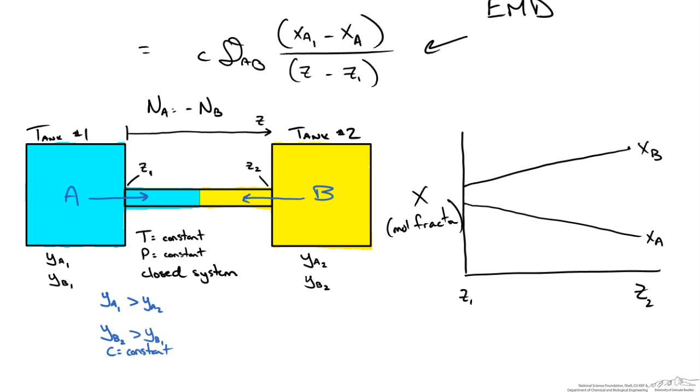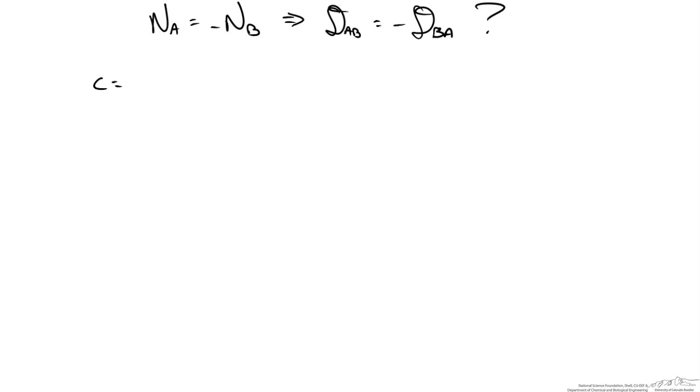One last thing to point out with this binary system is if we know that the flux of A must be equal and opposite to the flux of B, does this also mean that the diffusivity of AB is equal to the negative diffusivity of BA? Well we know that the concentration is constant and this is equal to the concentration of A plus the concentration of B.